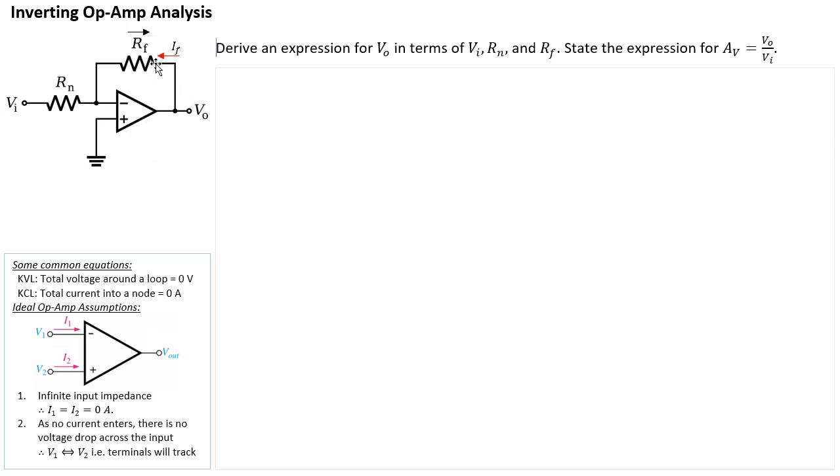And now the current IF will then flow down and then we get to this junction. But because of the first assumption, there'll be no currents going into the non-inverting terminal. So that means all of IF will flow across RF and then will completely flow across RN. So the original IF current that is flowing through RF will also flow through RN.